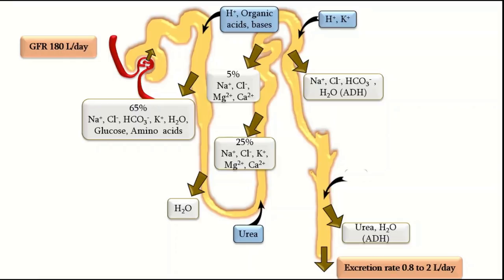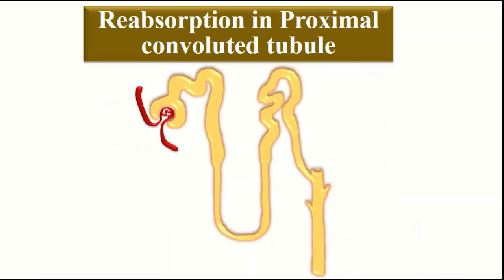Hydrogen ions are secreted into the late distal tubule, collecting tubules, and medullary collecting duct. An important summary point: the early portions of the nephron up to the descending limb of the loop of Henle are very permeable to water, while the later segments are impermeable to water. The collecting tubules and distal convoluted tubule become permeable to water only in the presence of anti-diuretic hormone.